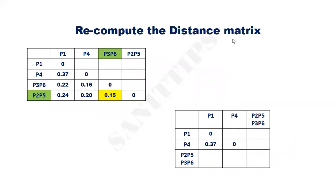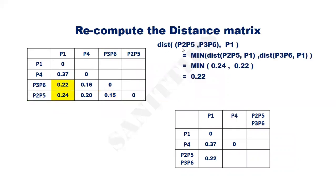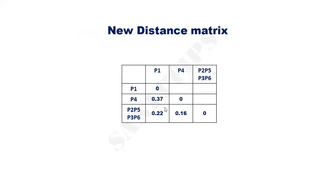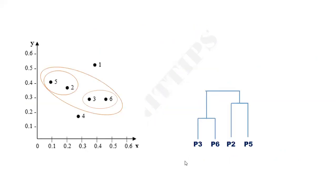Again, recompute the distance matrix. The distance from {P2, P5, P3, P6} to P1 is 0.22. The distance from {P2, P5, P3, P6} to P4 is 0.16, and the last entry is 0. Again, identify the smallest value. It is 0.16, which is the distance between {P2, P5, P3, P6} and P4. So they can be clubbed together into one cluster, and here is the corresponding dendrogram.